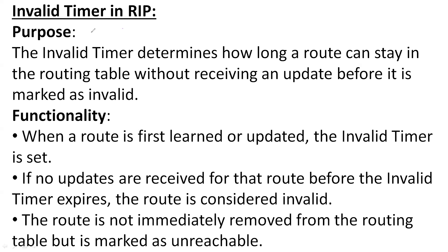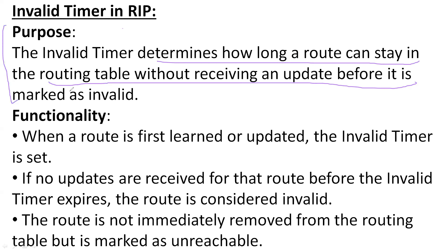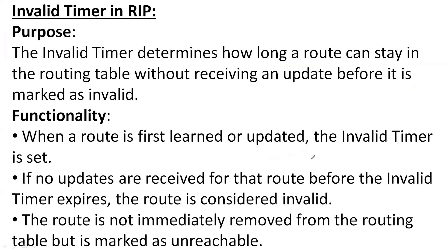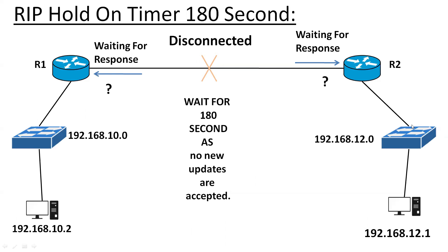The invalid timer determines how long a route can stay in the routing table without receiving any update. When a route is first learned or updated, the invalid timer is set. If no update is received before the invalid timer expires, the route is considered invalid. After 180 seconds without a message from a neighbor, that route is marked as invalid.